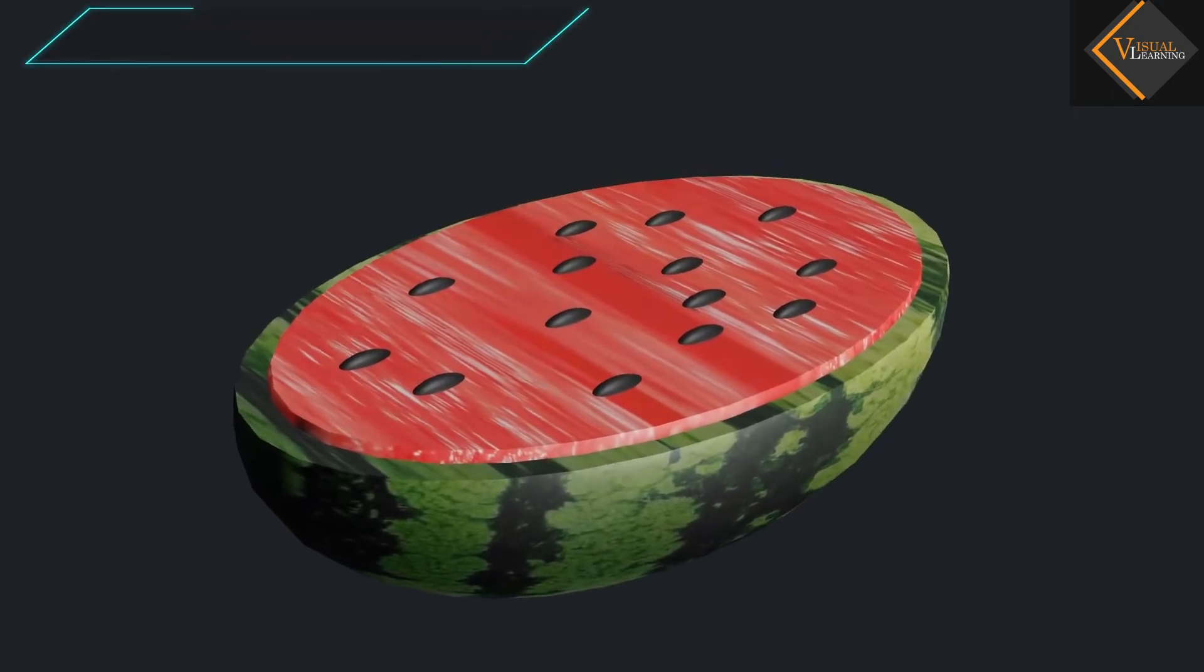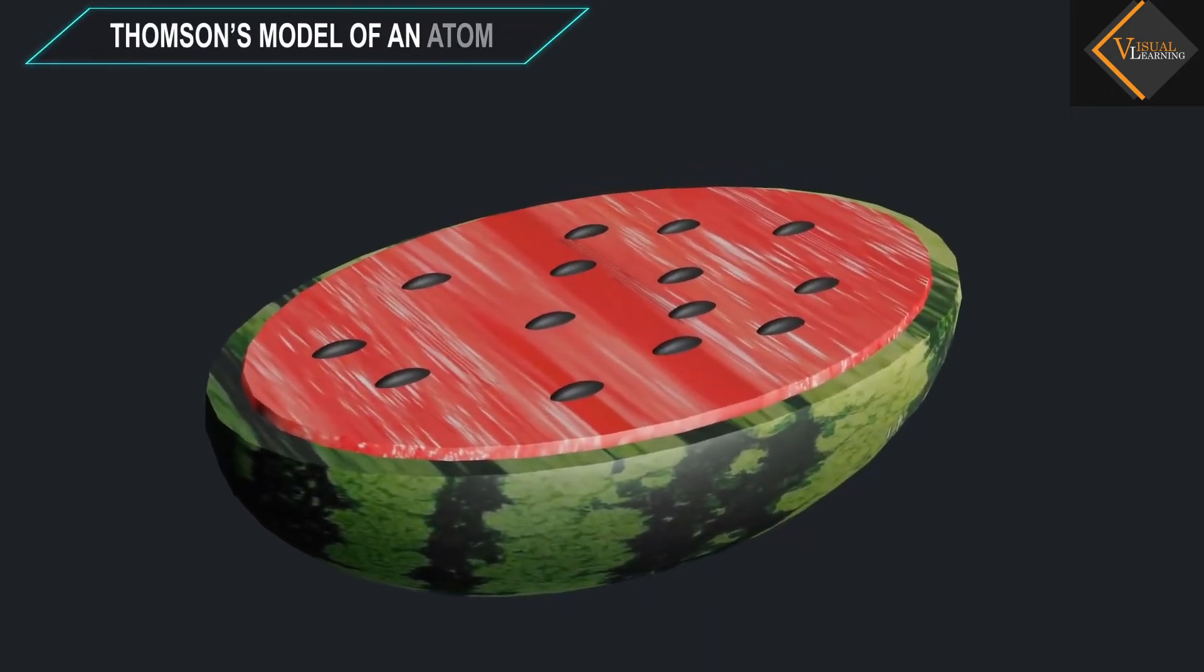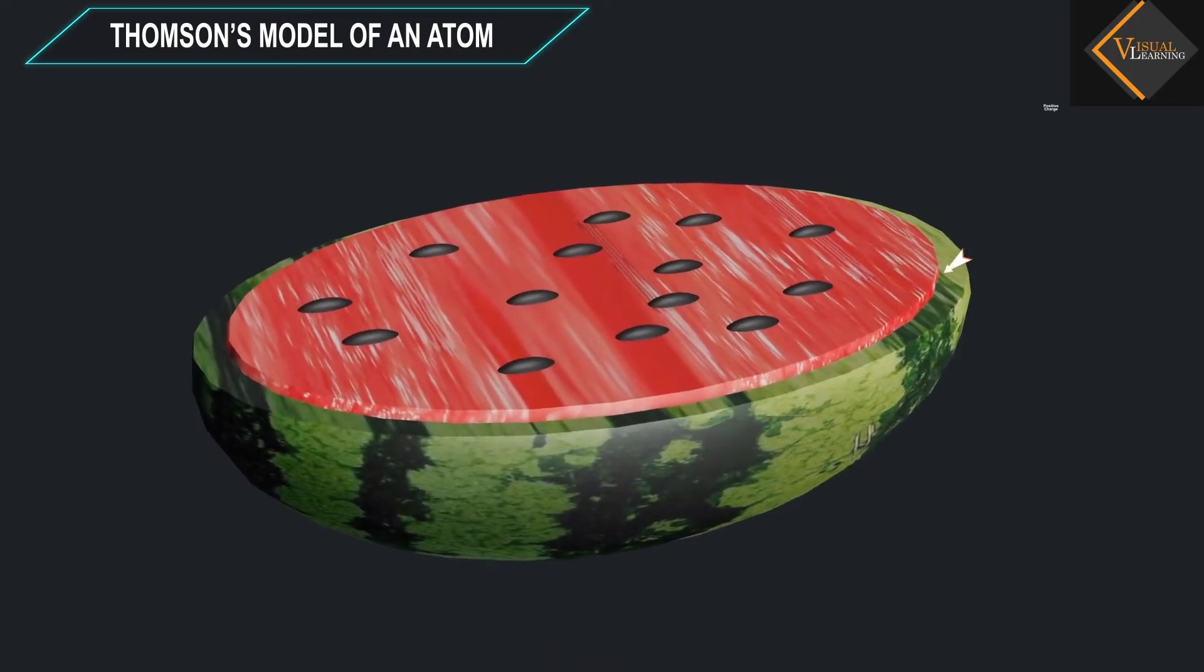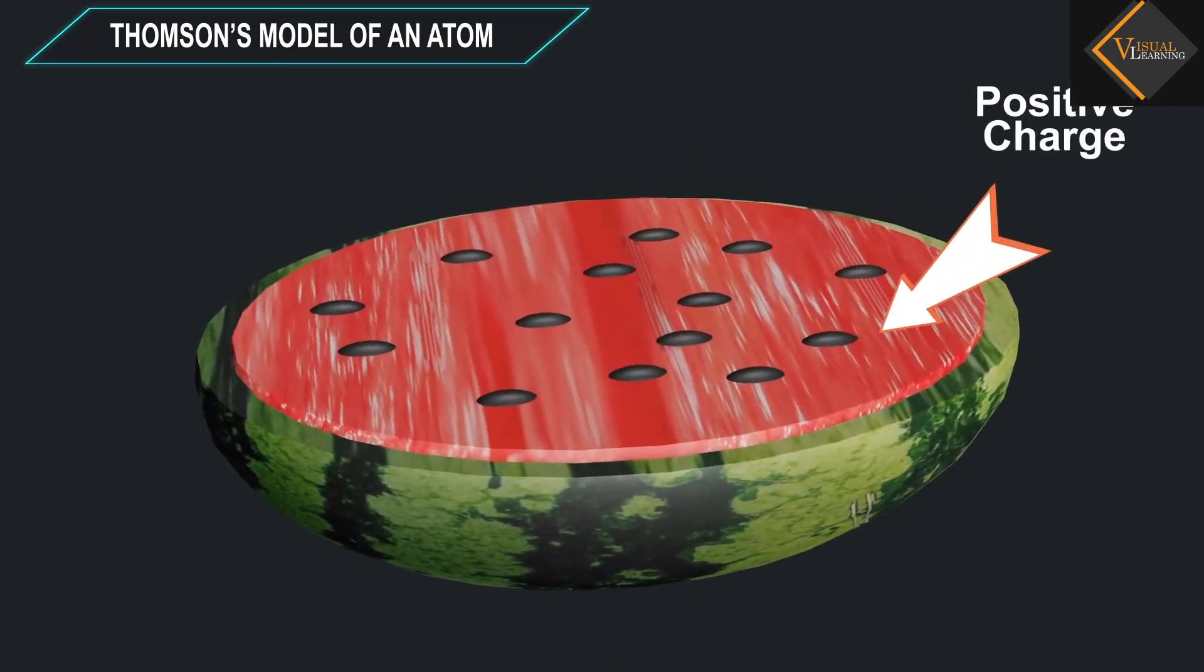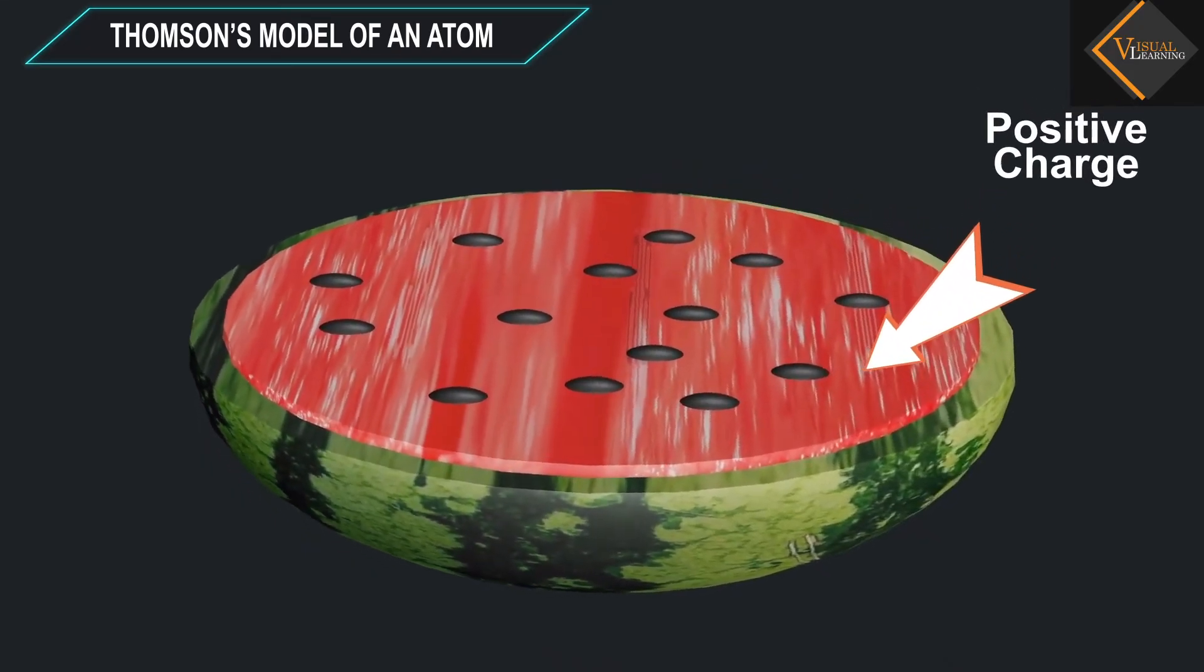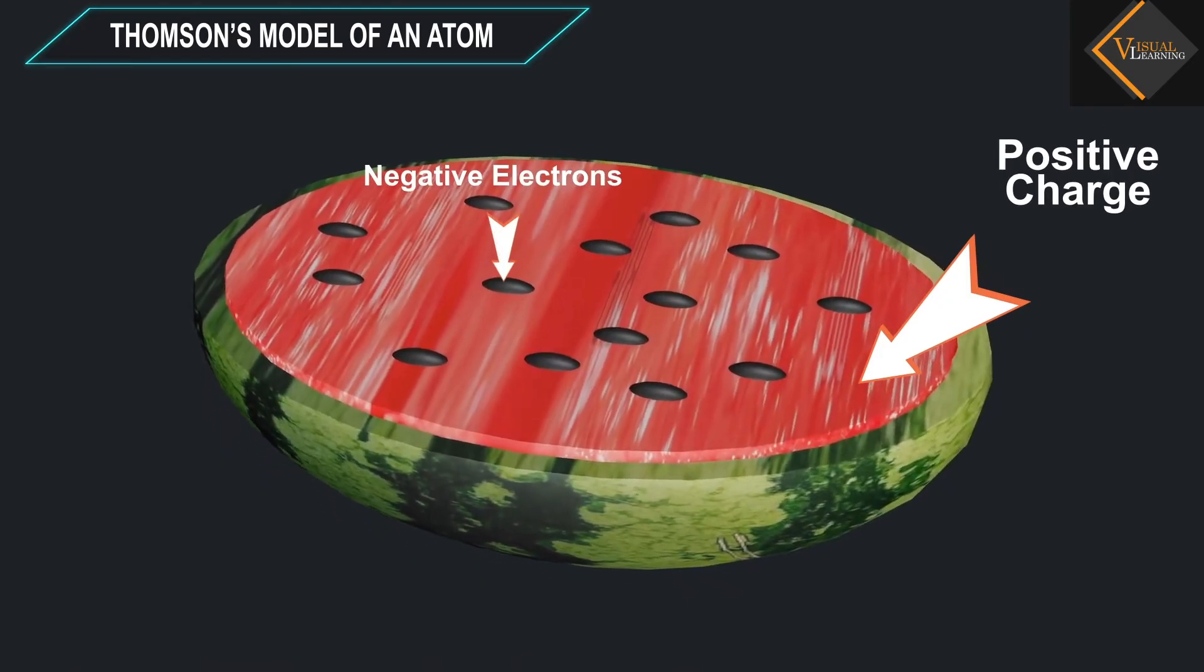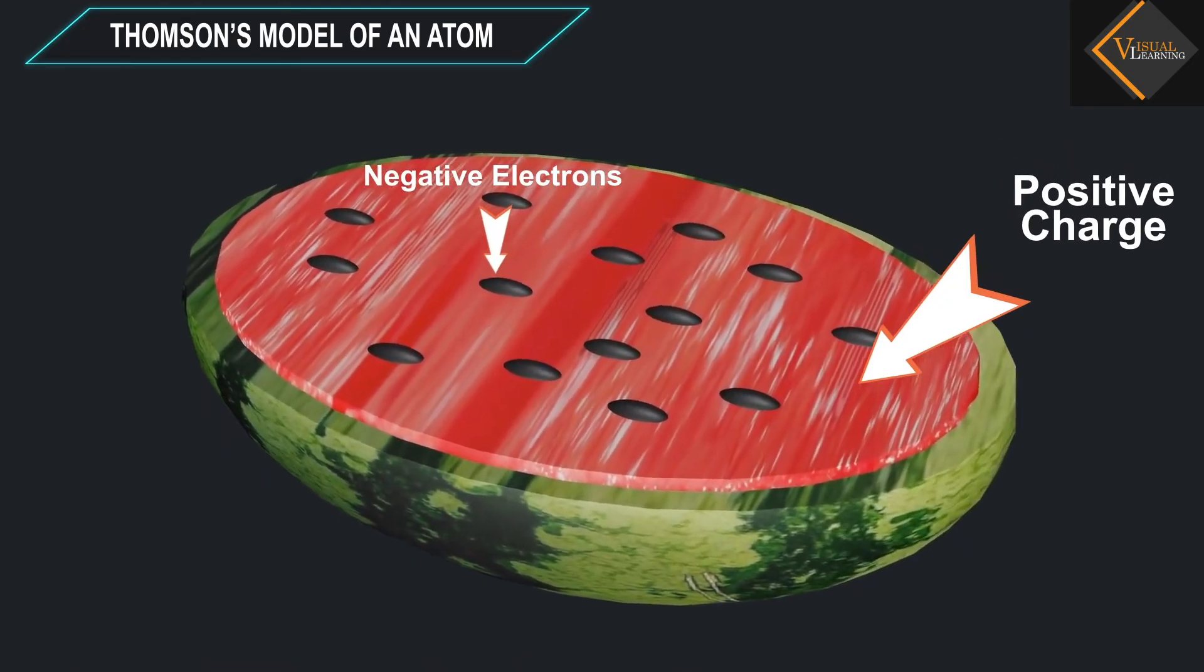We can also think of a watermelon. The positive charge in the atom is spread all over, like the red edible part of the watermelon, while the electrons are studded in the positively charged sphere, like the seeds in the watermelon.